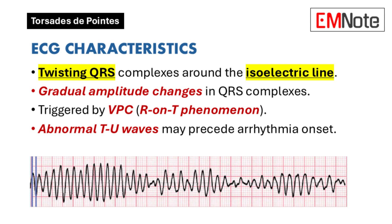ECG characteristics of Torsades de Pointes: it presents as oscillatory changes in the amplitude of the QRS complexes on the electrocardiogram, creating a twisting pattern around the isoelectric line. These variations occur gradually and are often initiated by a premature ventricular contraction during the T-wave repolarization phase of the previous cardiac cycle, referred to as the R-on-T phenomenon.